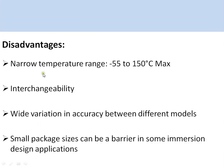Cost is also very reasonable. However, the disadvantages are that IC sensors have a very narrow temperature range, from minus 55 to 150 degrees Celsius. Interchangeability is also a problem — if one IC is damaged, you cannot directly substitute another due to variation between ICs. There is also wide accuracy variation between different models.